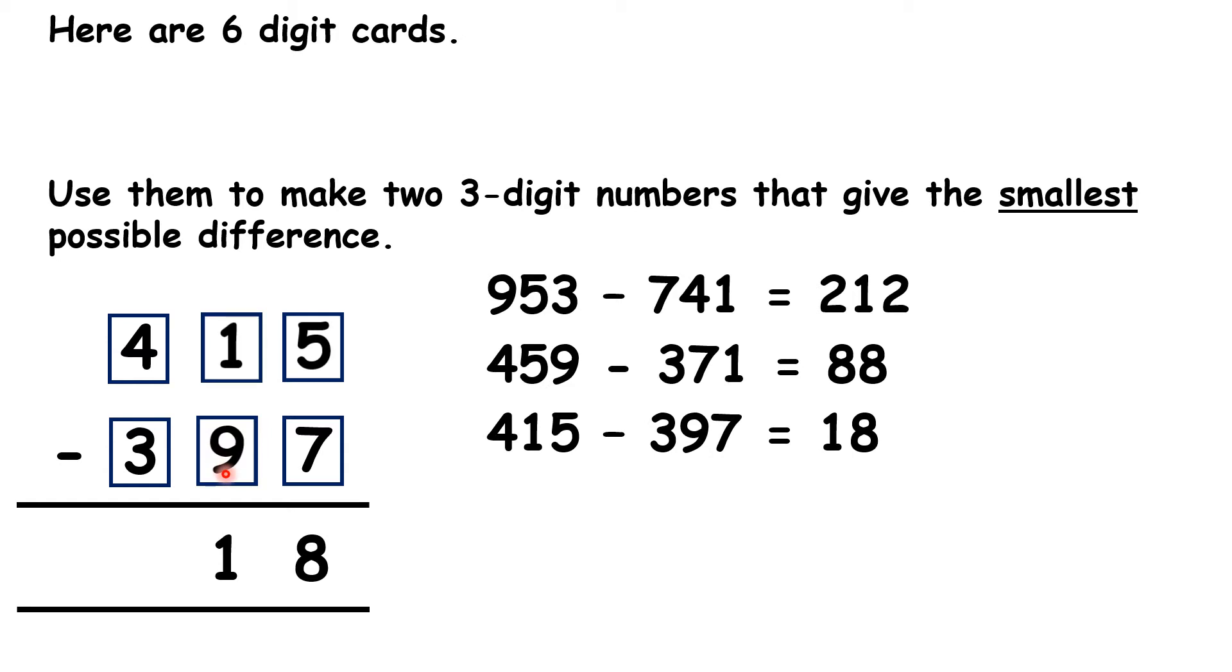And then we have the 9 and then the 7 in our bottom number, because 397 is the largest number we can make if we keep the 3 in the same place. So 415 minus 397 gives us a difference of only 18.